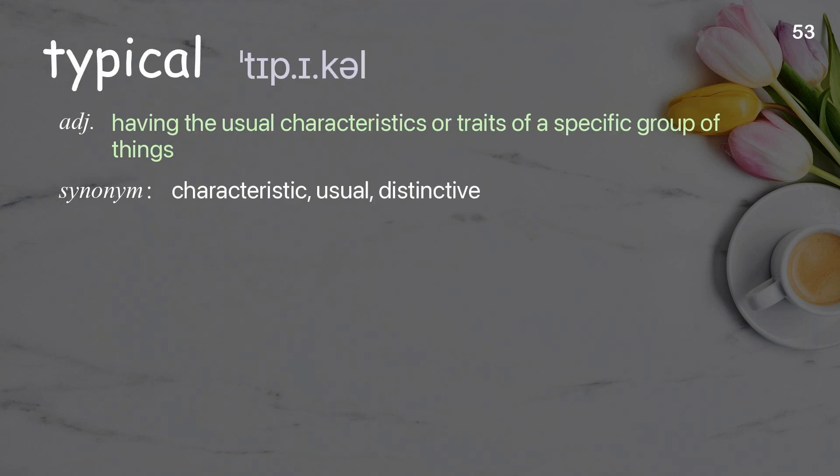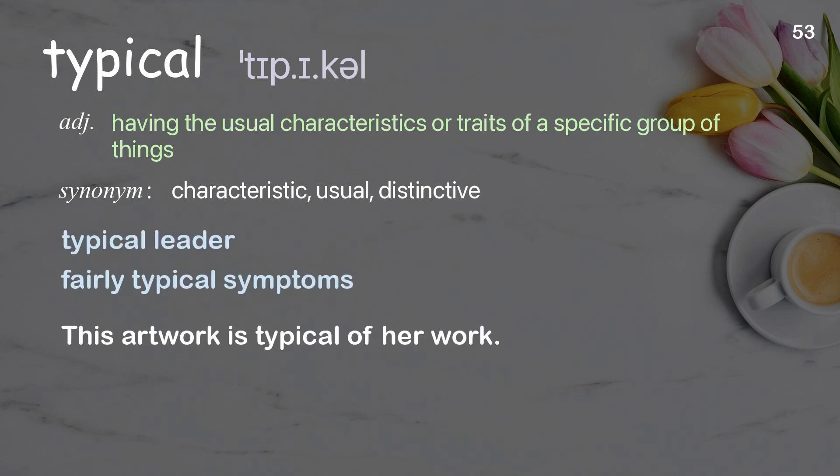Typical. Having the usual characteristics or traits of a specific group of things. Examples: typical leader, fairly typical symptoms. This artwork is typical of her work.